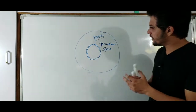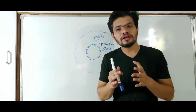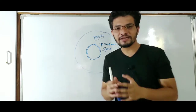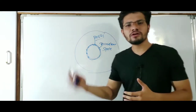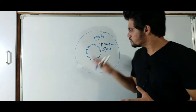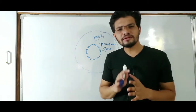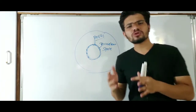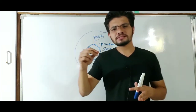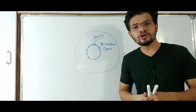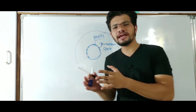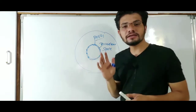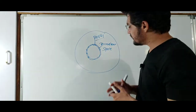The nucleus contains all the genetic material of the cell, which is transferred from generation to generation. It contains the genetic material in the form of chromatin. Chromatin is a fibrous nucleoprotein, meaning it consists of nucleic acid and proteins like histone proteins.